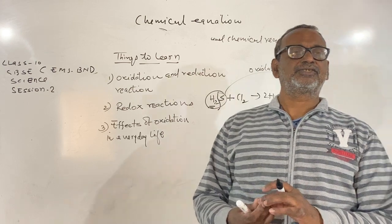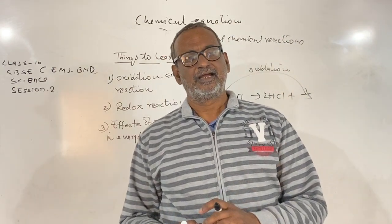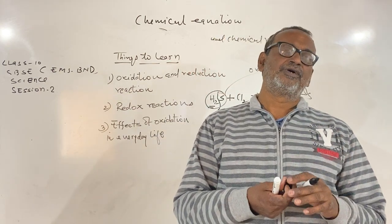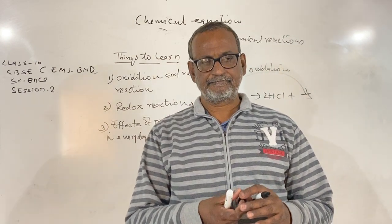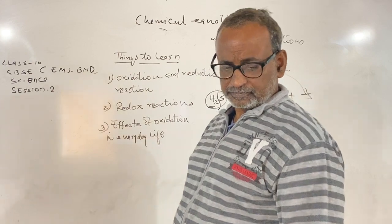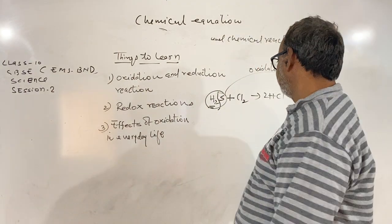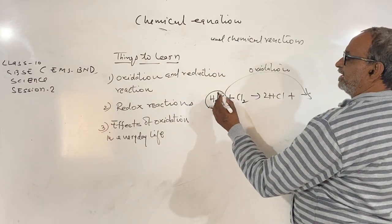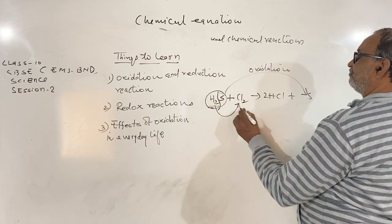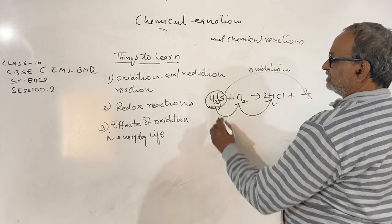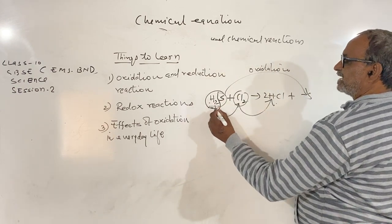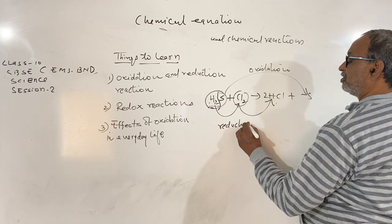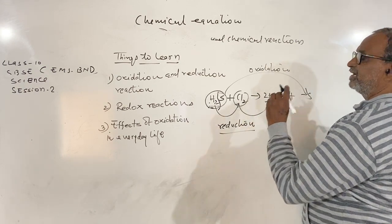On the basis of these reactions, we can define an oxidation reaction as one in which either oxygen is combined with a substance or hydrogen is removed from a substance. In the same reaction, the hydrogen separated from hydrogen sulfide combines with chlorine to form HCl. Since hydrogen is combined with chlorine, we can say that reduction of chlorine to HCl is taking place.